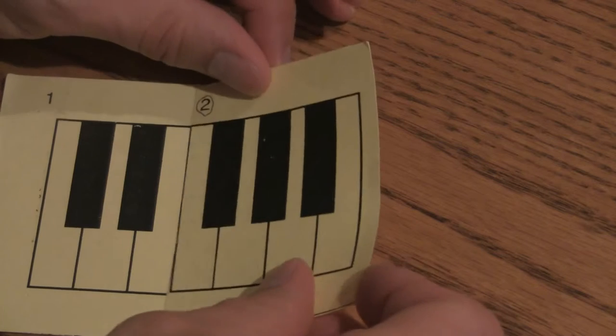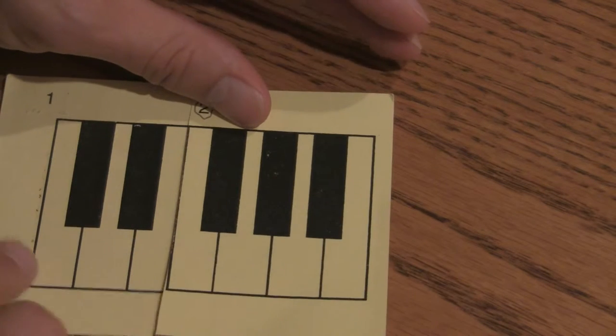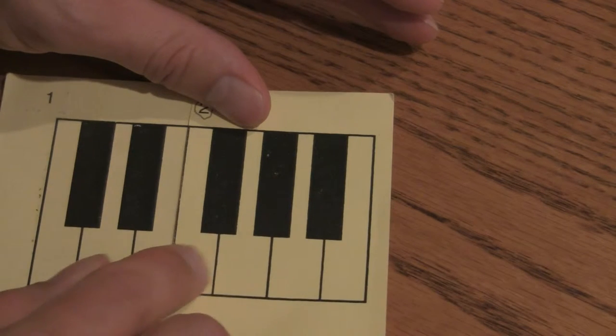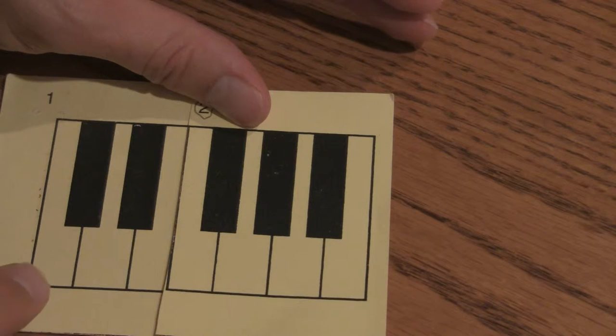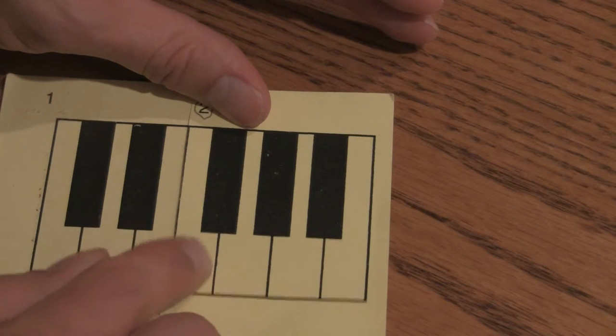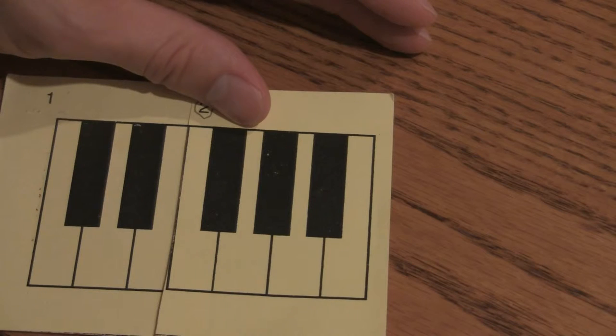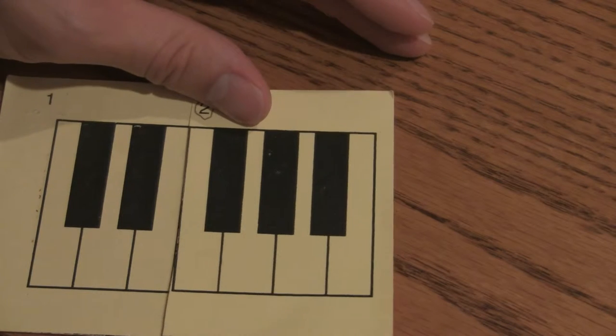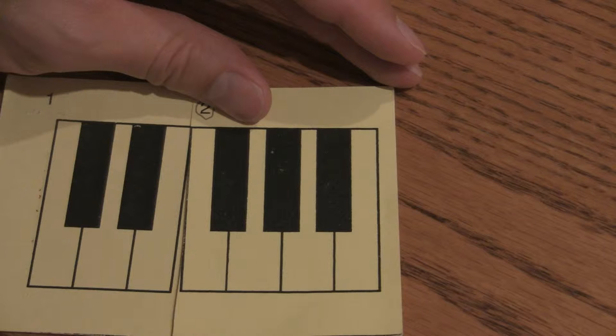So putting them together, we have C, D, E, F, G, A, B, and then it would repeat C, D, E, F, G, A, B seven and a third times on a standard piano keyboard.